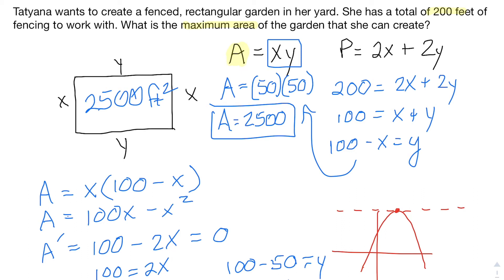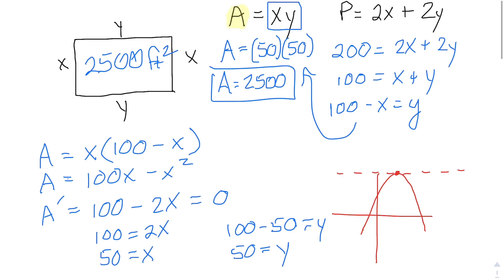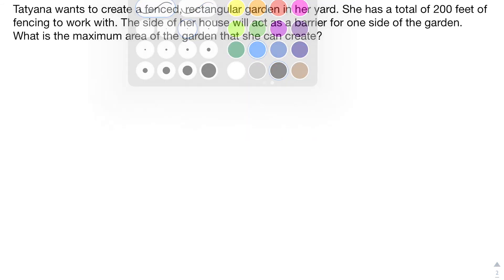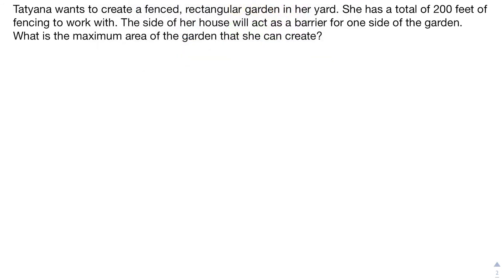That's a very common iteration of optimization questions for rectangular fencing. Now let's look at one more example with a curveball. This question is similar — it's still asking for maximum area — but it adds something new: the side of her house will act as a barrier for one side of the garden.